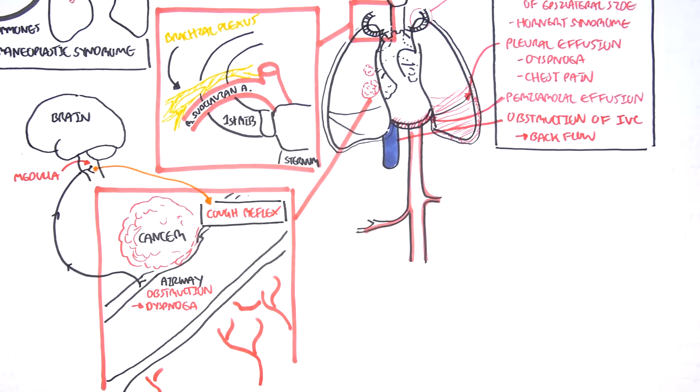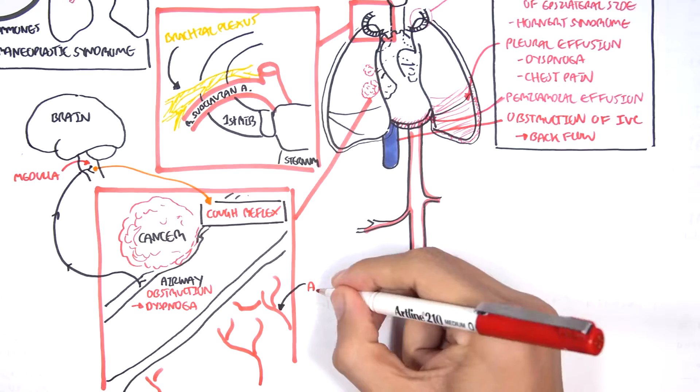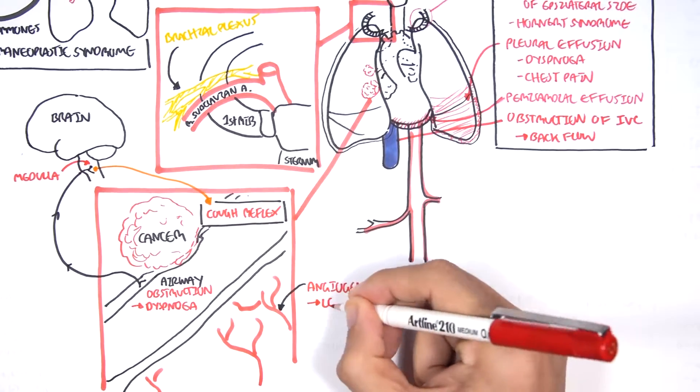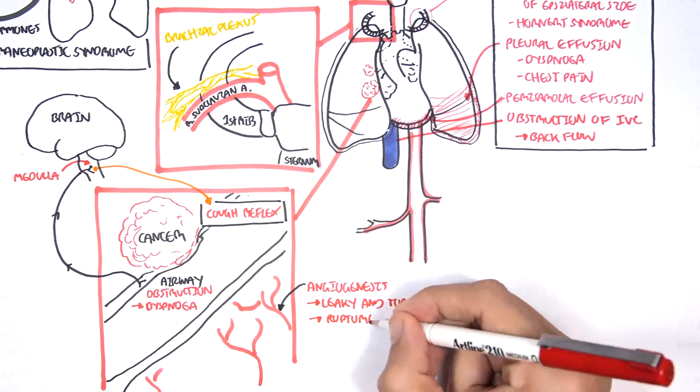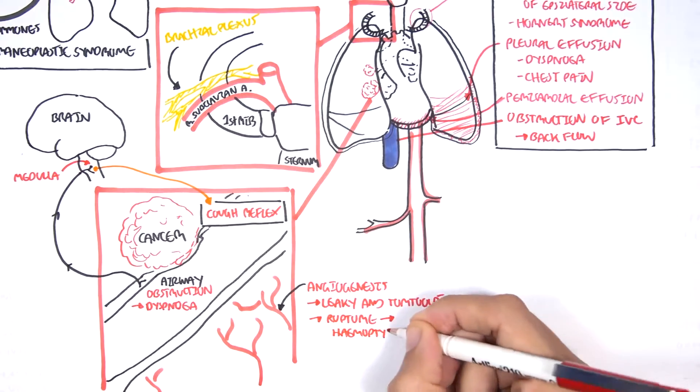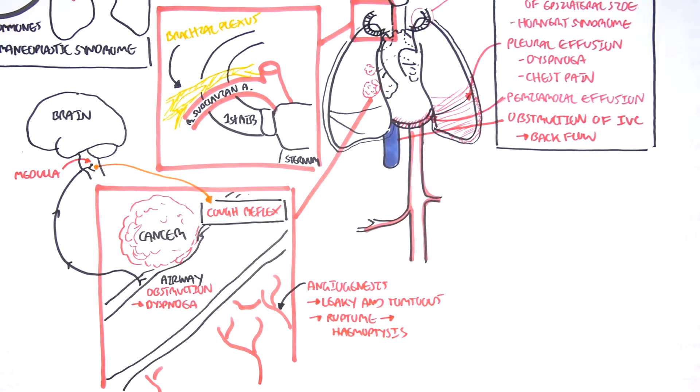Cancer or tumor also stimulates angiogenesis, which is blood vessel growth. However, angiogenesis forms leaky and tortuous vessels, which when ruptures can lead to hemoptysis.